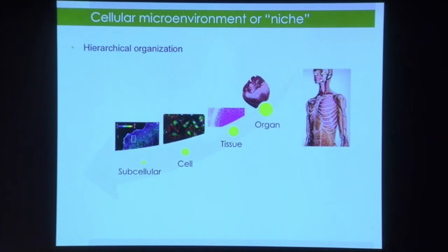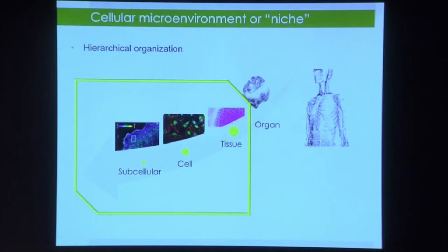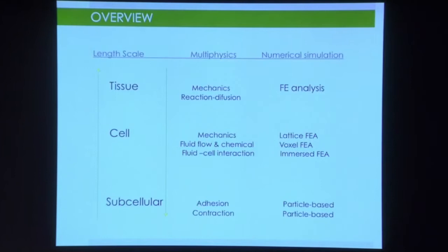We have to keep in mind that our body is a very complex system with a clear hierarchical organization. When we try to understand how cells are moving, we need to know the microenvironment that the cells are sensing. In this presentation, I'm mainly going to focus on what's happening when I observe cell migration at tissue level and cell level. I will show different models, numerical approaches, and the different multi-physics problems we are solving.